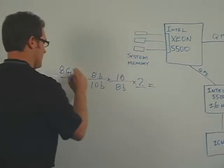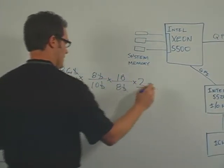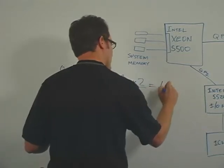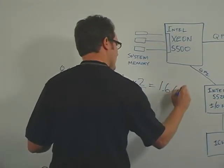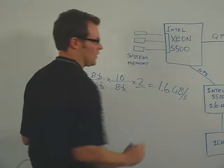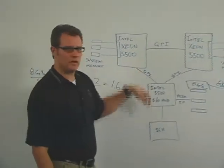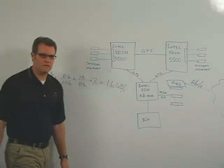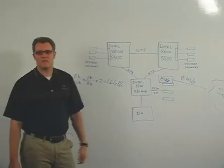And you cancel these things out, those cancel out bit per second, and it ends up about 1.6 gigabytes per second goes through this PCIe 2.0. So it's pretty high bandwidth. Next we'll talk about some performance.